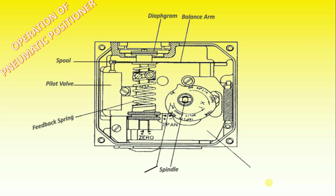The spindle and cam rotate, forcing the lower arm upwards, compressing the feedback spring. This motion will continue until the two forces are equal and the unit is in equilibrium position.